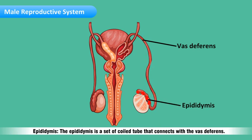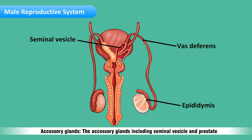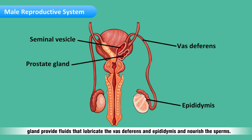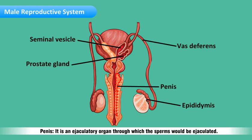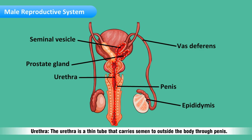Epididymus: the epididymus is a set of coiled tubes that connects with the vas deferens. Accessory glands: the accessory glands, including seminal vesicle and prostate gland, provide fluids that lubricate the vas deferens and epididymus and nourish the sperms. Penis: it is an ejaculatory organ through which the sperms are ejaculated.